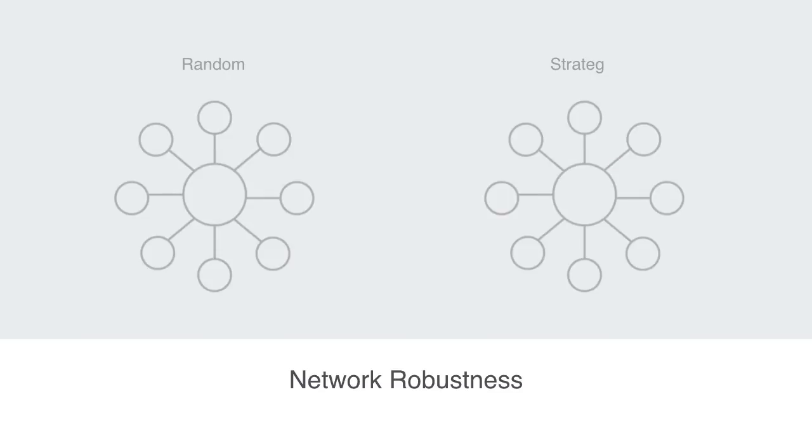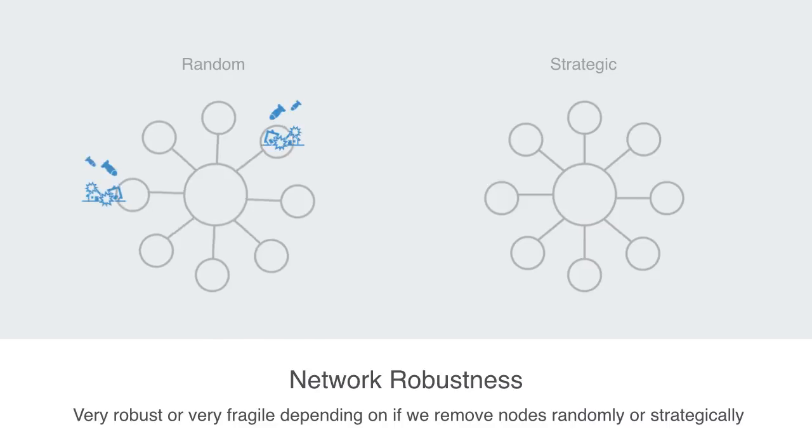One last thing we'll note about these centralized networks in respect to their robustness is that they can be very robust or very fragile depending if we are removing nodes randomly or strategically. If we were removing nodes randomly, then they will be very robust to failure, because the vast majority of nodes have a very low degree of connectivity, and thus we would likely be removing one of these insignificant nodes with little effect on the overall network.